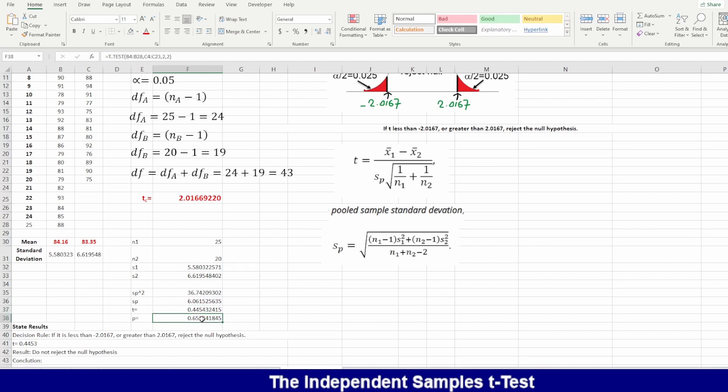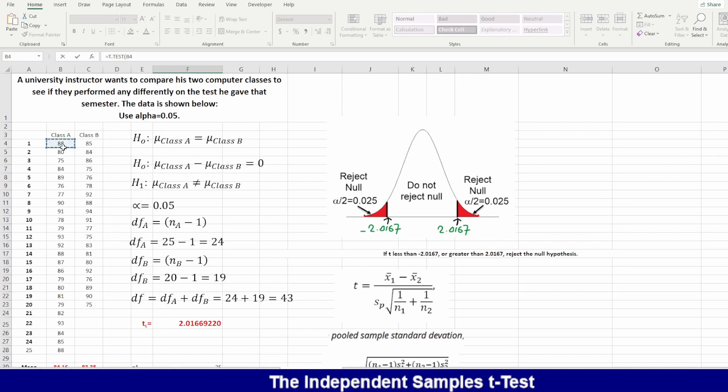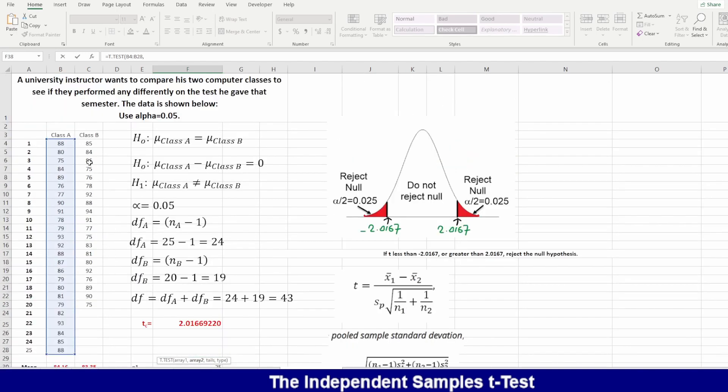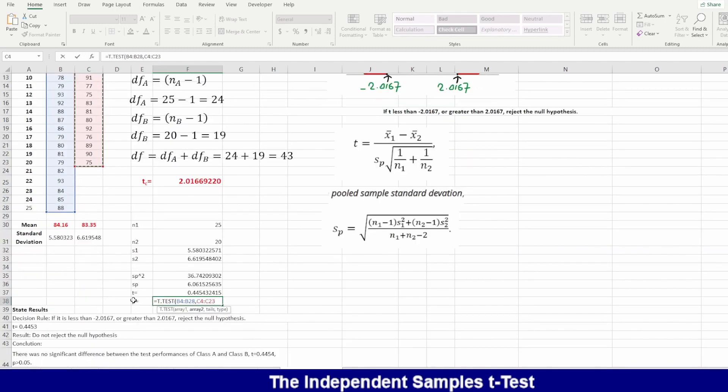Now to calculate the probability of this one, we will use the T.TEST command. Equals to T.TEST. This one here is asking me what is the first array. This is my first array or sample. Comma, asking what is the second one. This is the second one. Comma. He's asking if it is one tail or two tails. It's two tails. I will click on this one. The type here is two sample equal variance and it's not dependent. And the probability is 0.65.